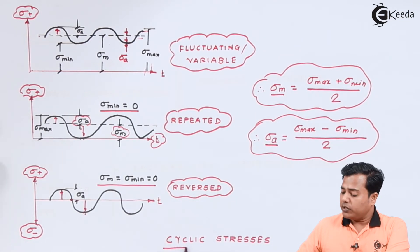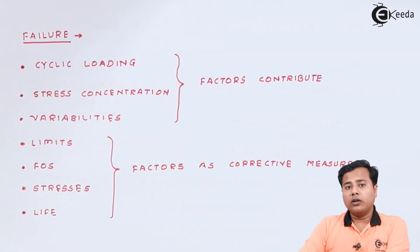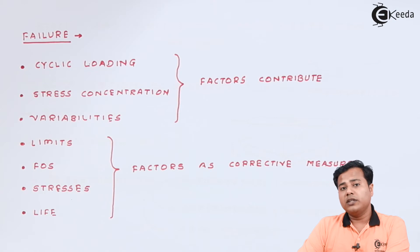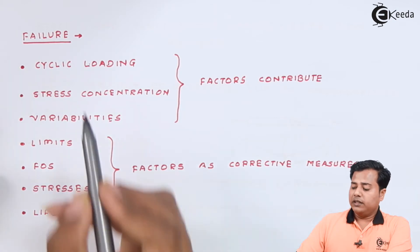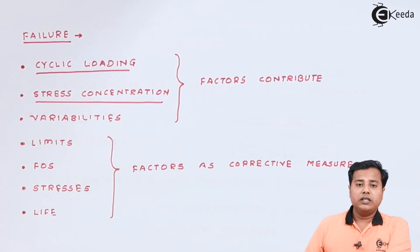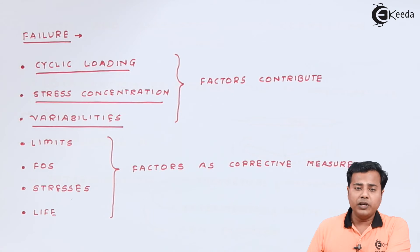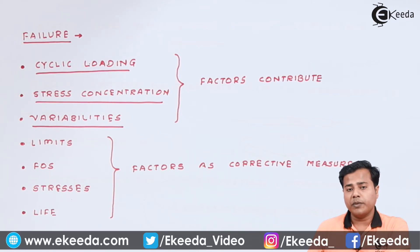Failure due to cyclic, reverse, repeated, or variable loading is primarily caused by cyclic loading. Other factors include stress concentration — where abrupt changes in area, material properties, or loading conditions cause drastic stress changes — and variabilities in area, material, properties, or loading conditions, which cause non-uniform and variable stresses.